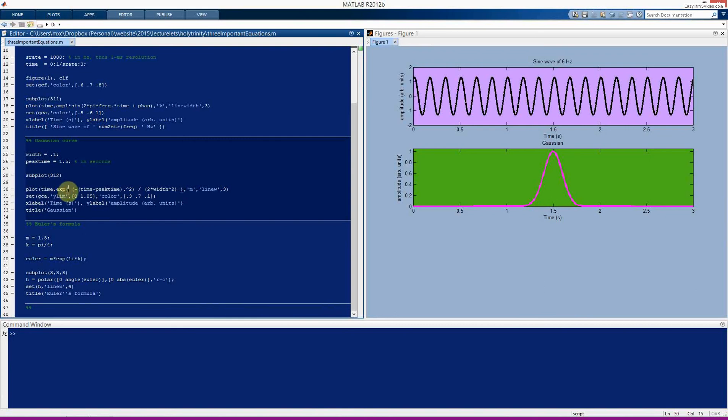So e to the minus t squared is implemented in MATLAB as exp and then parenthesis minus time squared. So you can see if we would set peak time to be 0, then it would just drop out here and we would have e to the minus t squared over 2s squared.